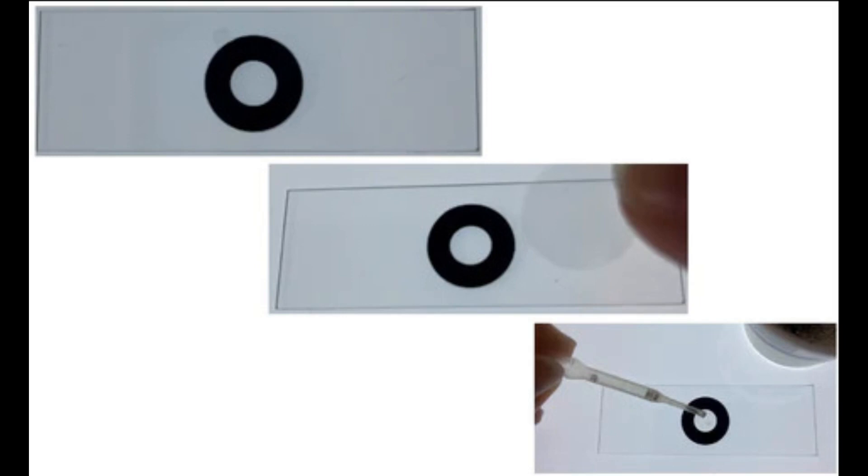To use them, peel the ring off of the sticker sheet, stick it to the center of a slide, peel the clear sticker off the top. Add your drop of water, then put the clear sticker back on to seal in the liquid. Place it in your Foldscope for further study.